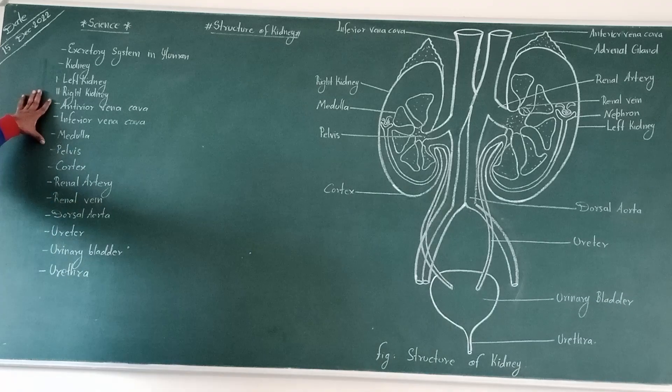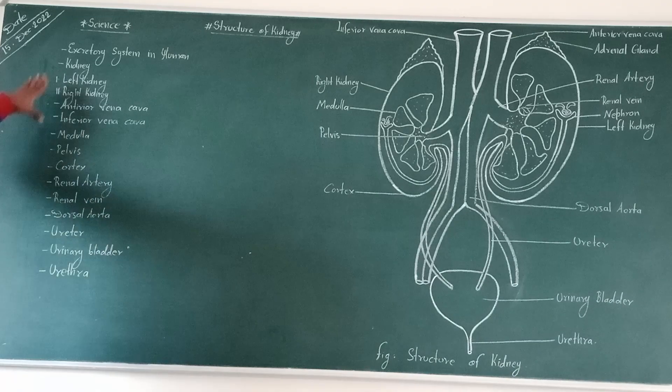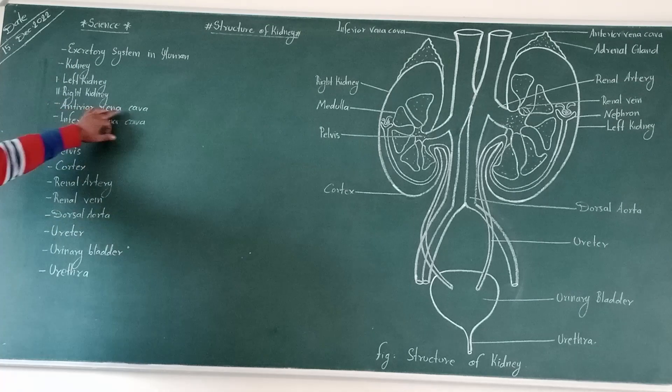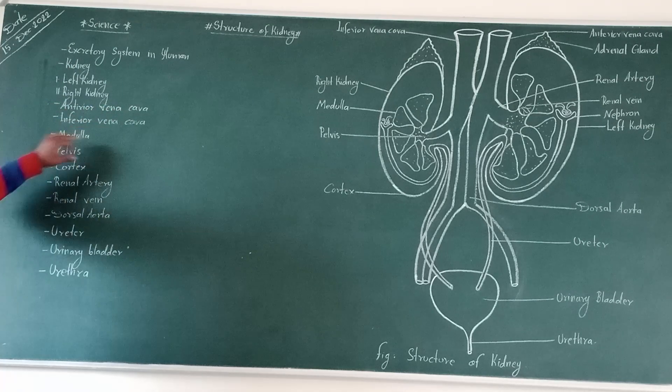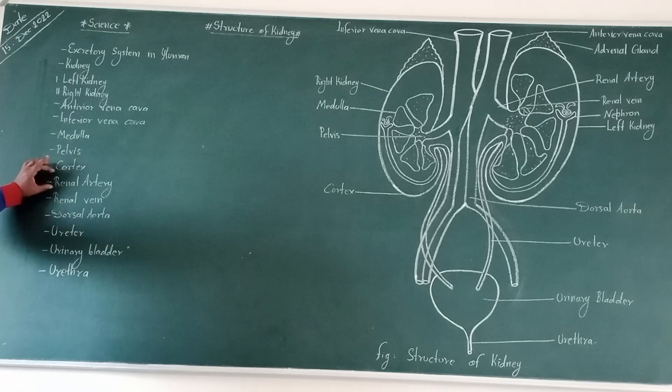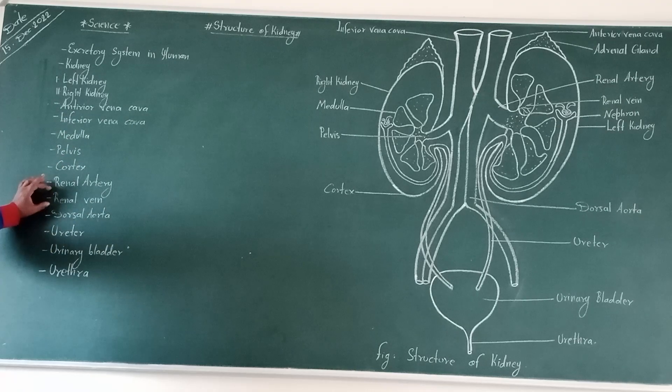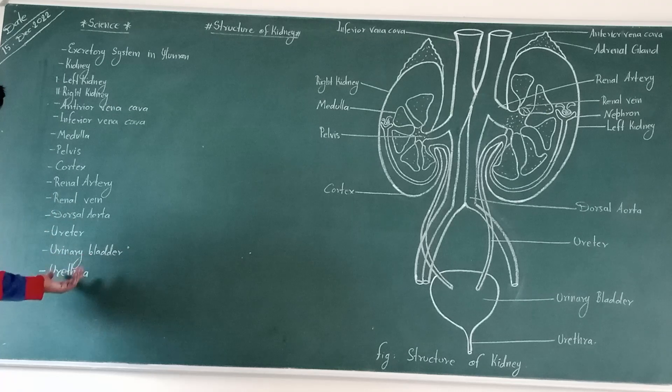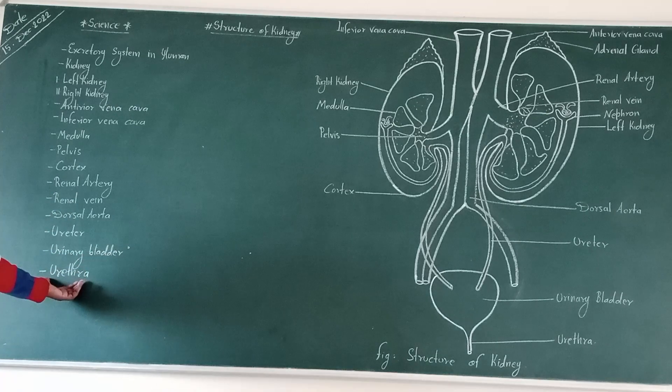And these are actually three special features of reference excretory system in humans, like inferior vena cava, medulla, pelvis, cortex, renal artery, renal vein, dorsal aorta, ureter, and urethra.